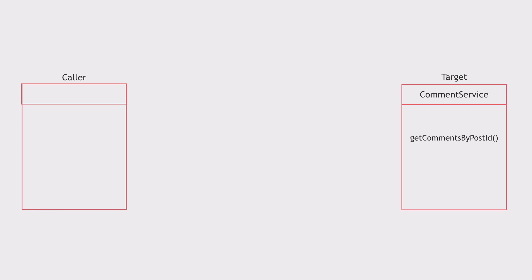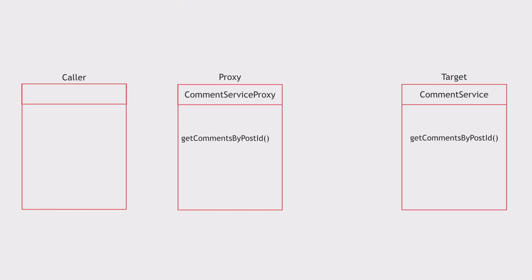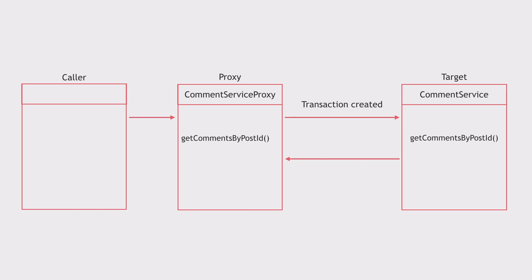So what happens under the hood when the @Transactional annotation is added? When @Transactional is present, Spring creates a proxy which will stand between the caller and the target, so that external invocations will always call the method on the proxy, and then the proxy will invoke the actual method. But before the method invocation, it will create a transaction. Once the method execution finishes on the target, the transaction will be committed or rolled back.